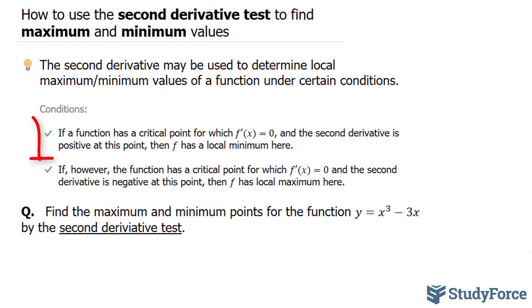And here they are. If the function has a critical point for its derivative, and the second derivative is positive when we input that critical point into the second derivative, then there's a local minimum at that point.